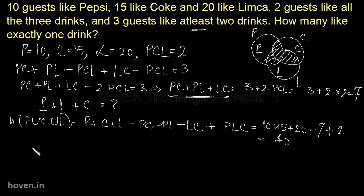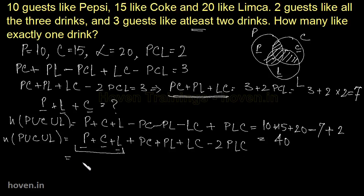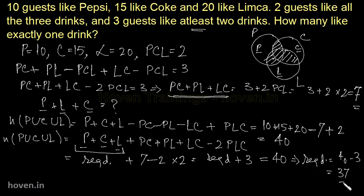So N(PUCUL) is 40. Let me use the second equation now. N(PUCUL) is equal to P underscore plus C underscore plus L underscore, add PC plus PL plus LC and subtract twice of PLC. So this is the second equation which you already know. So I will write it as required, so required plus this sum. This sum is already 7, so plus 7 minus 2 PLC minus 2 multiplied by 2. So this is required plus 7 minus 4, which is 3. And PUCUL is already known to be 40, so I will write it as 40, which implies required is equal to 40 minus 3 which is equal to 37. So this is the answer for this question.